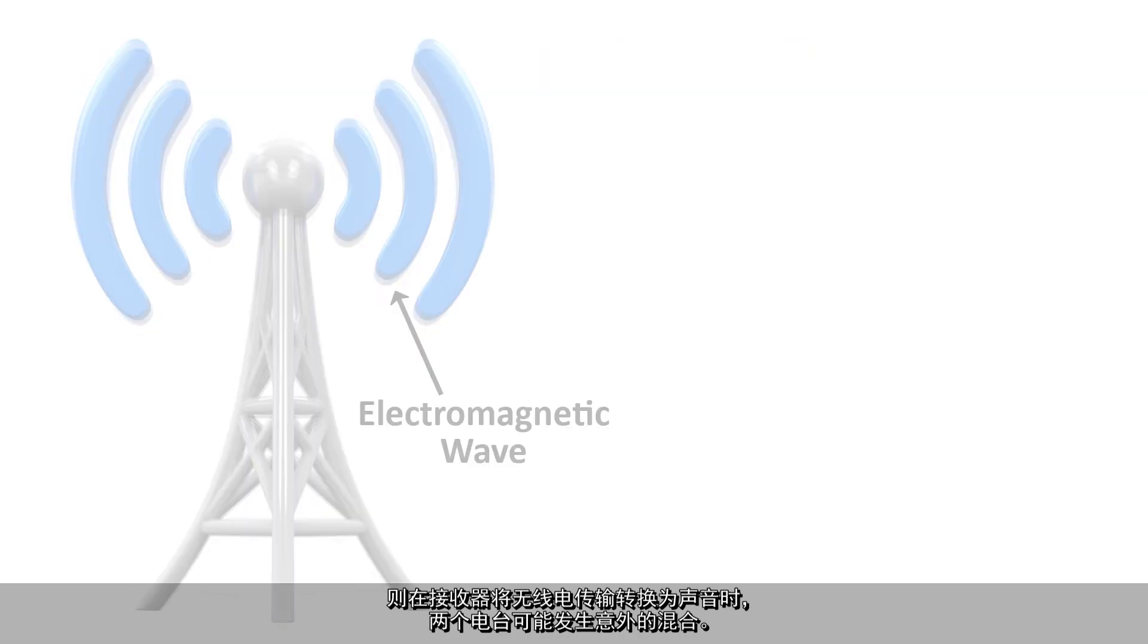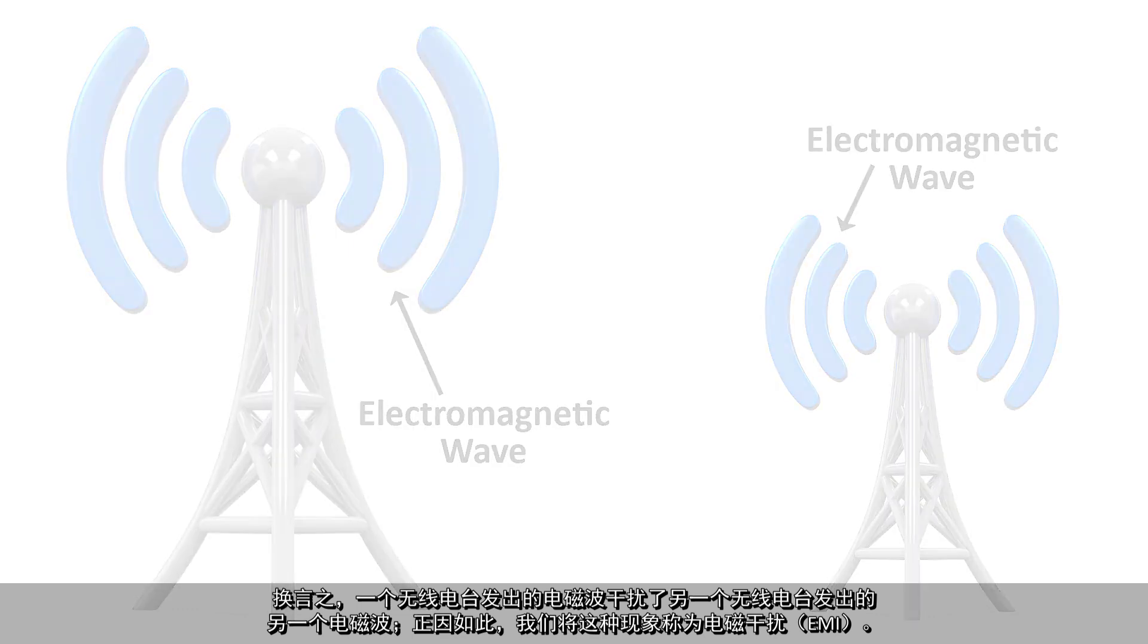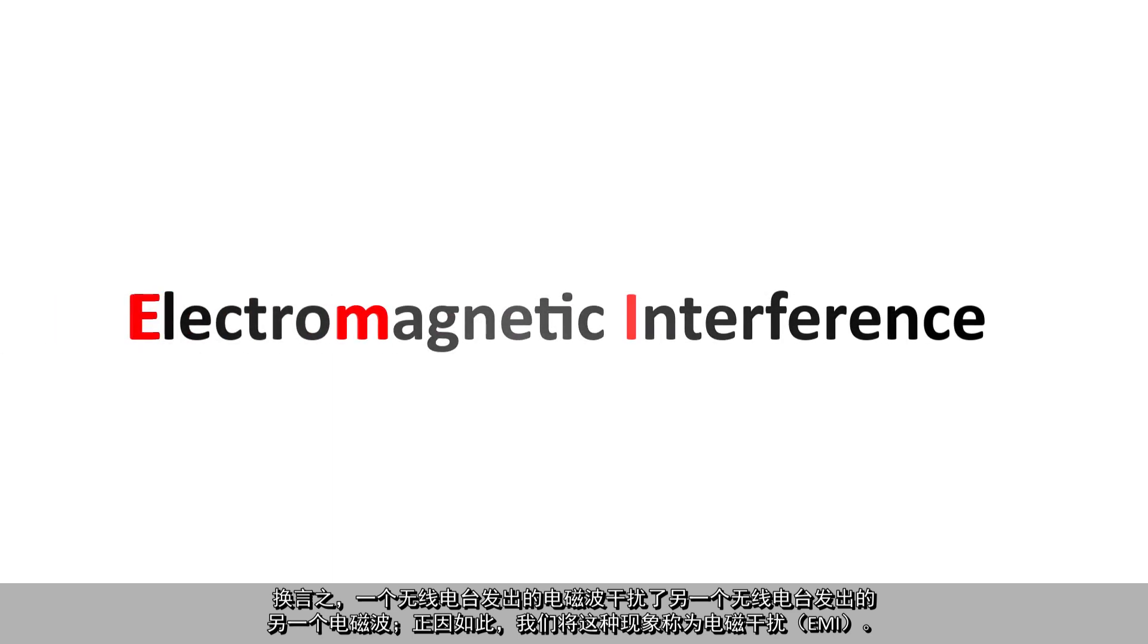In other words, an electromagnetic wave from one radio station is interfering with a different electromagnetic wave generated by a different radio station. This is why we call the interference electromagnetic interference, or EMI.